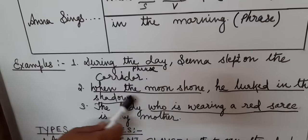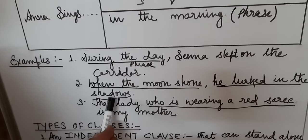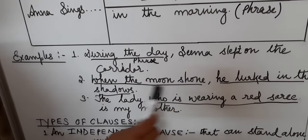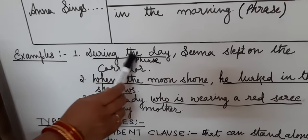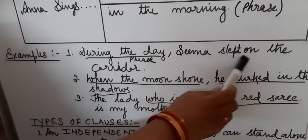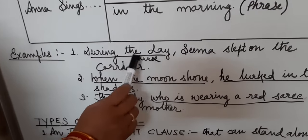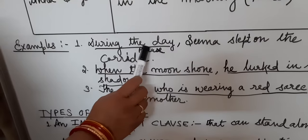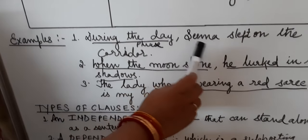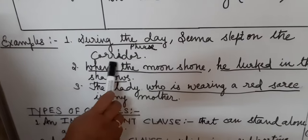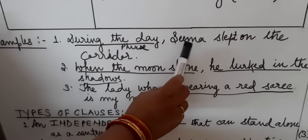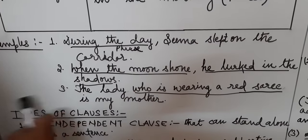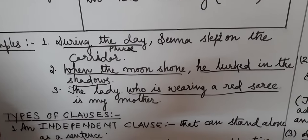So in the sentence 'when the moon shone, he lugged in the shadows,' there are two clauses. In the previous sentence 'during the day, Sima slept on the corridor' — 'during the day' had no subject and verb, so it was a phrase. 'Sima slept on the corridor' — Sima is subject and slept is verb, so it is a clause. Yahan par yeh clause hai.